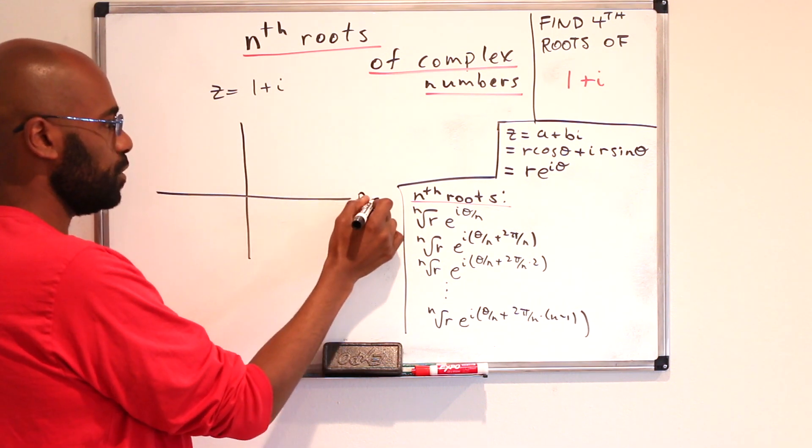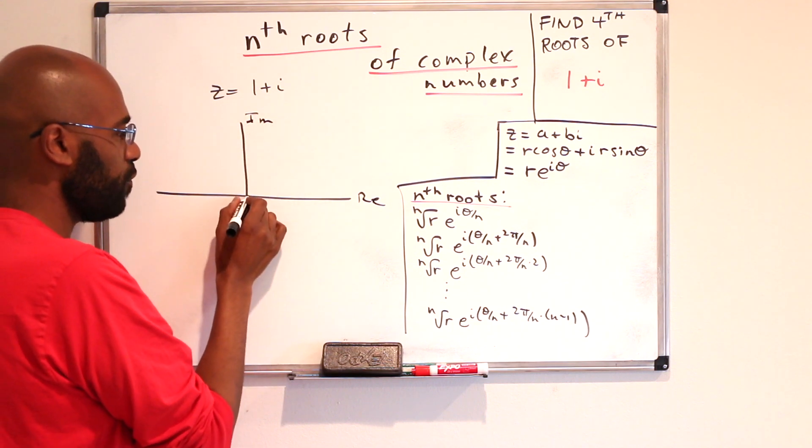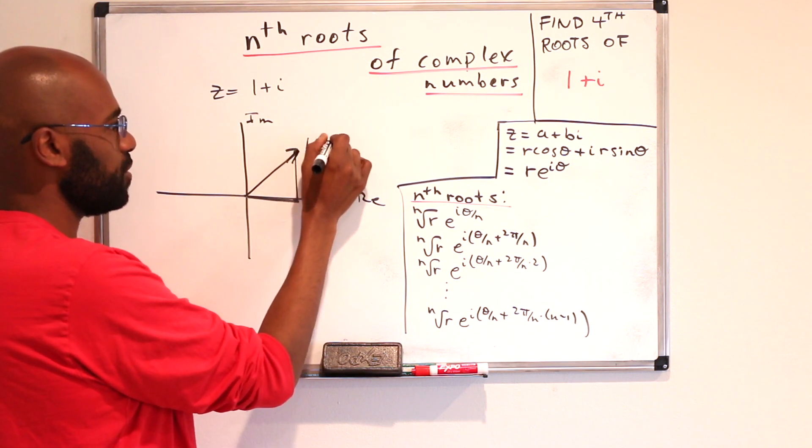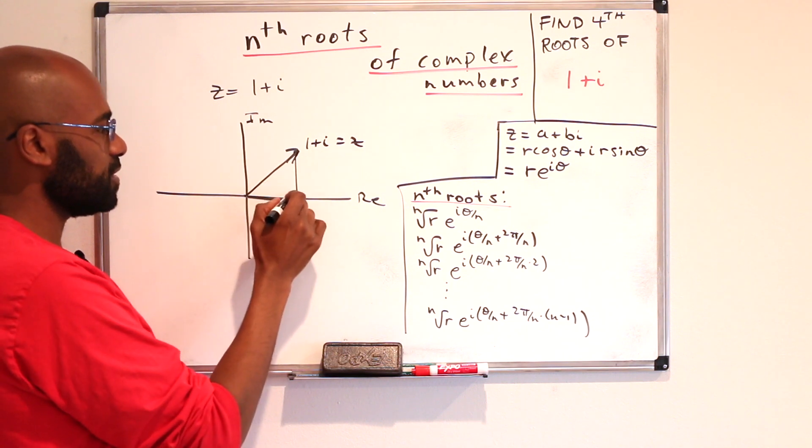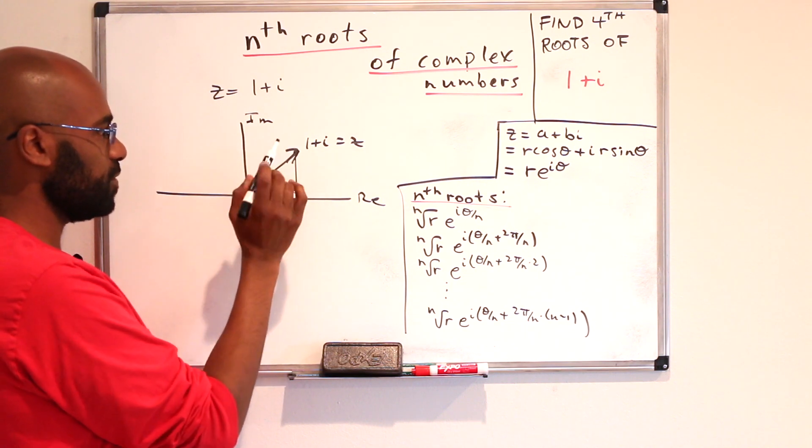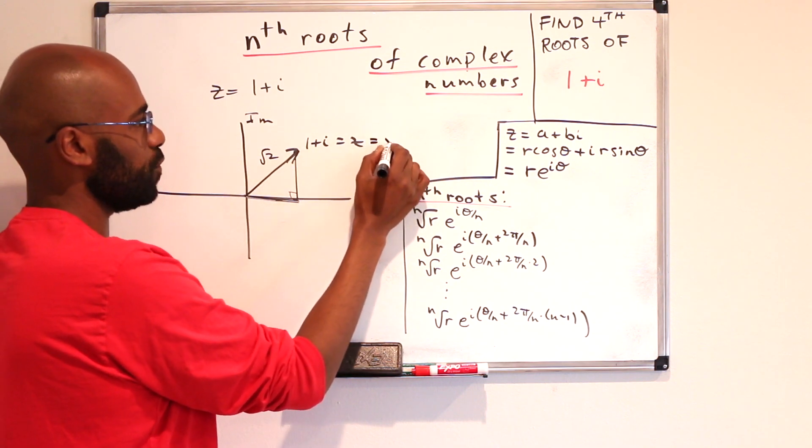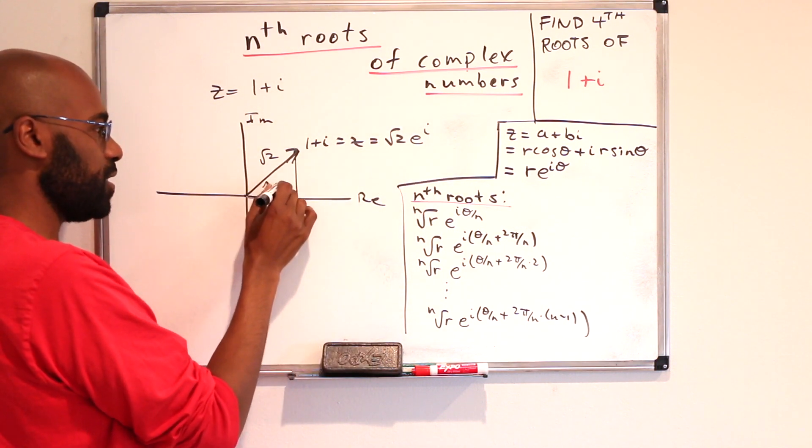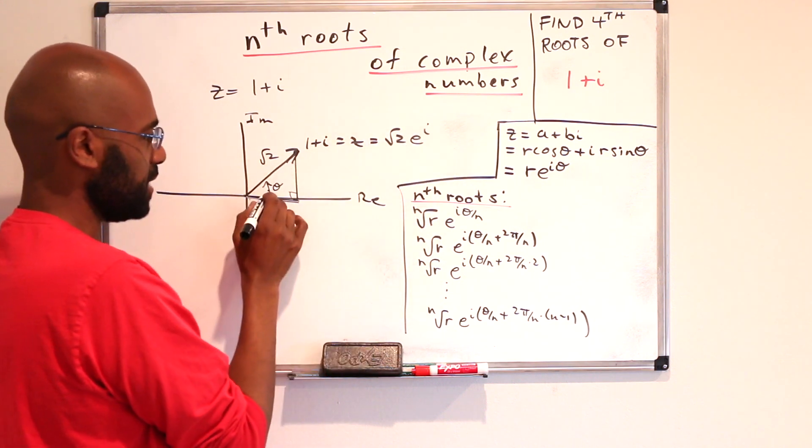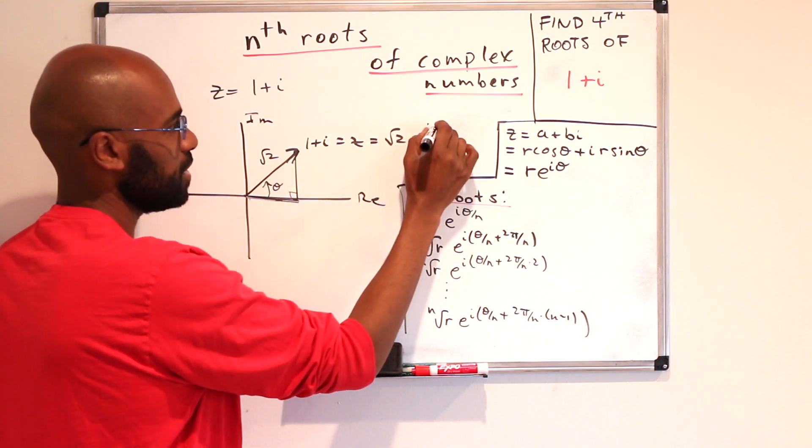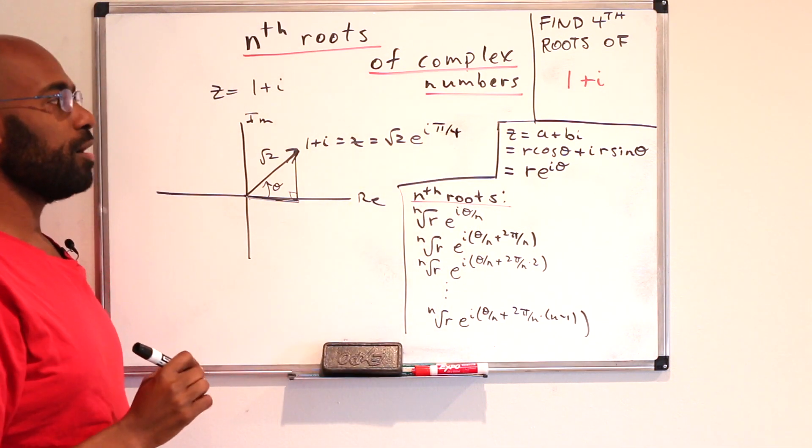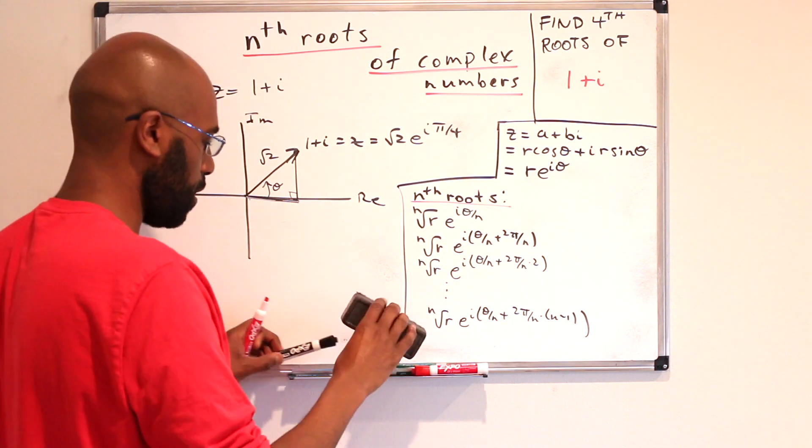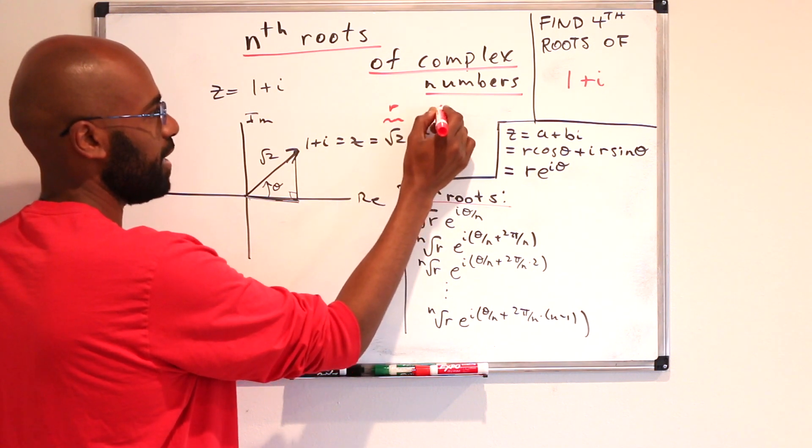Let's start with this number z, which is 1 plus i. And the first step is to actually write it in this polar form. So, to do that, we'll draw it in the complex plane. We move one over in the real direction and one over in the imaginary direction. And so, we have this number right over here as our number z. The length of this vector, because this length is 1 and this length is 1, by Pythagorean theorem, is root 2. So, this is root 2 e to the i times some angle. That angle is this angle right over here. And since these lengths are equal, this angle is actually pi over 4.